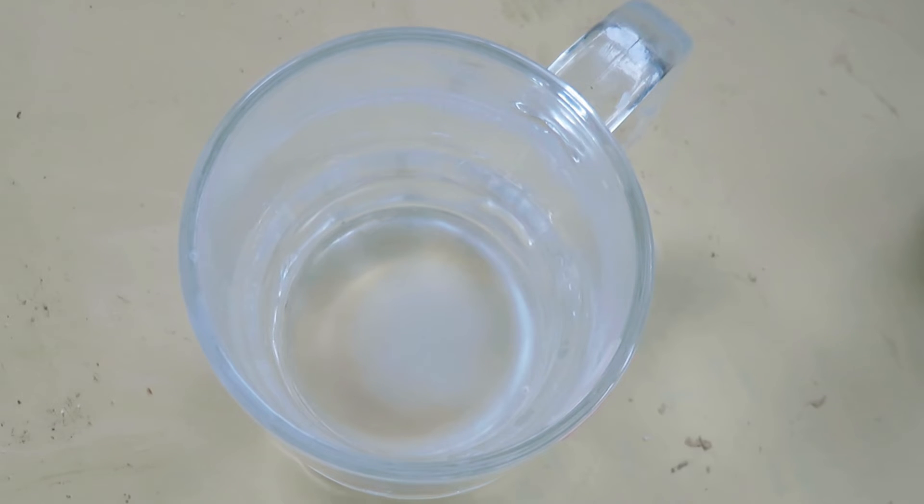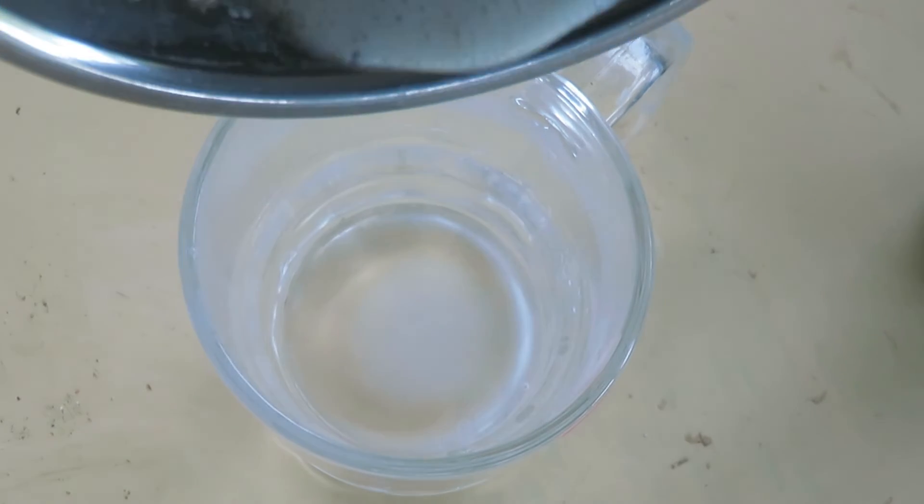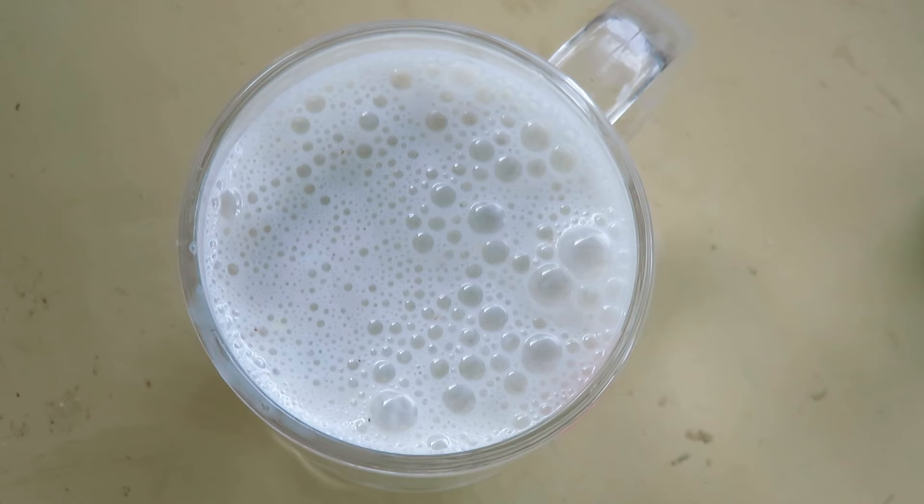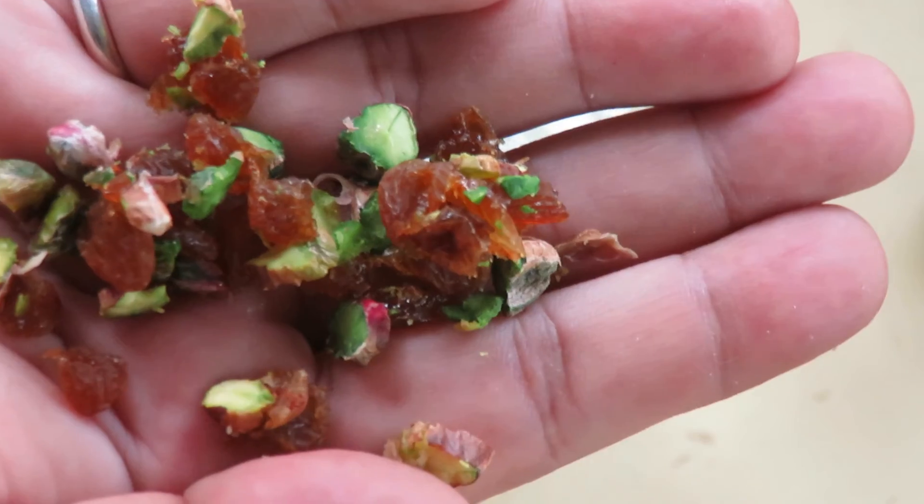So in the glass goes the mixture - our dry fruit lassi. We will garnish this with some pistachio and golden raisin, chopped. See, they look beautiful.